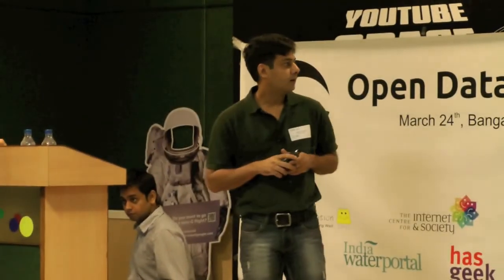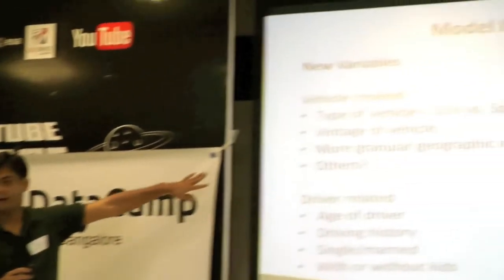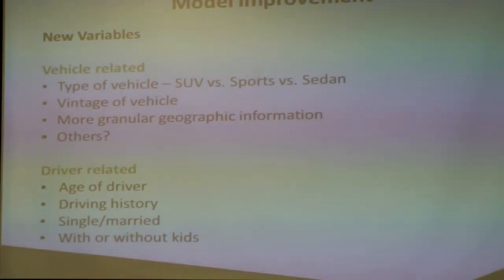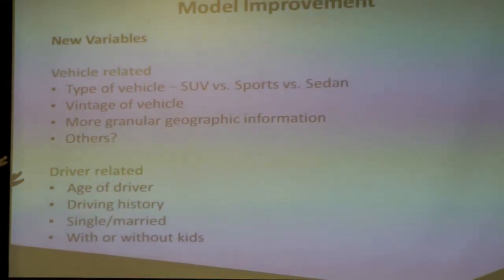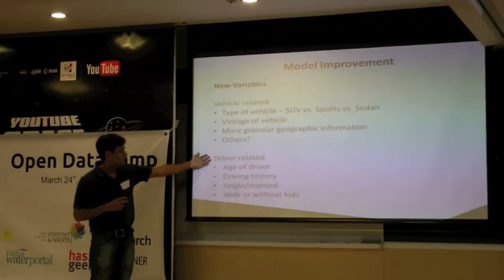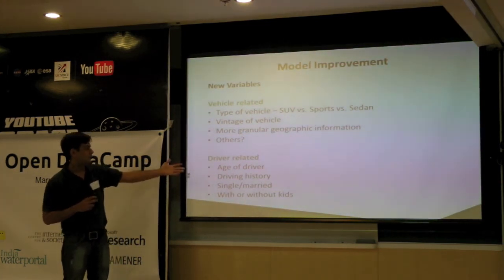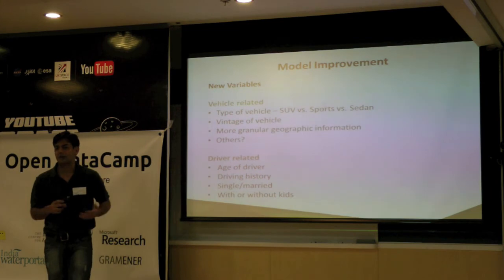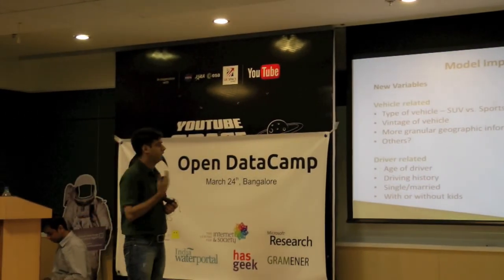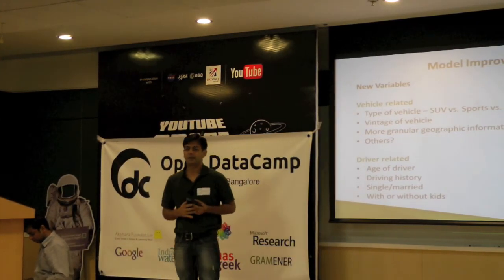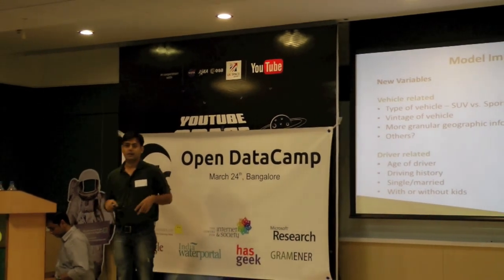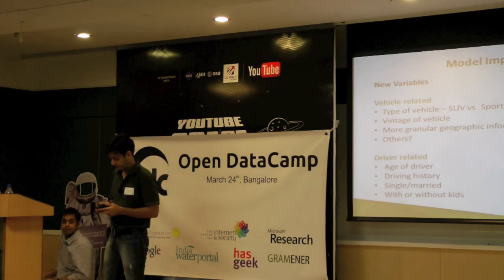Just the last point — there are many factors we could have considered in this model: type of vehicle, vintage of vehicle, more granular geographic information at the district level, and if driver-related information were available, the age of driver, driving history, marital status, and whether they have kids. These are very strong predictors in the US market where this data exists. If we start using personal information, these factors could really improve the models we've built. Thank you.